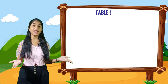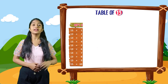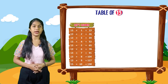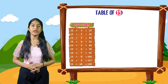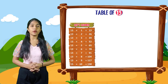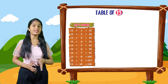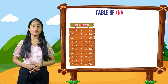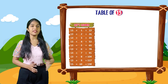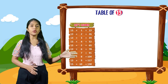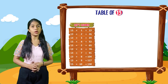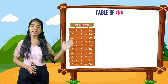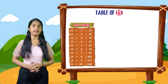So now we will do the table of 13. Let's learn. 13 into 1 is equal to 13. 13 into 2 is equal to 26. 13 into 3 is equal to 39. 13 into 4 is equal to 52. 13 into 5 is equal to 65. 13 into 6 is equal to 78. 13 into 7 is equal to 91. 13 into 8 is equal to 104. 13 into 9 is equal to 117. 13 into 10 is equal to 130.